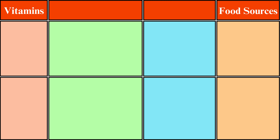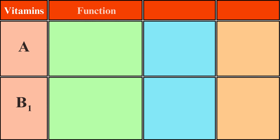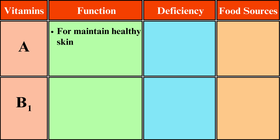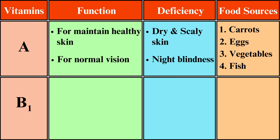Here is a table covering vitamins A, B1, C, D, E, and K — their functions, deficiency effects, and food sources. Vitamin A: maintains healthy skin and normal vision. Deficiency causes dry, scaly skin and night blindness. Food sources include carrots, eggs, vegetables, and fish.